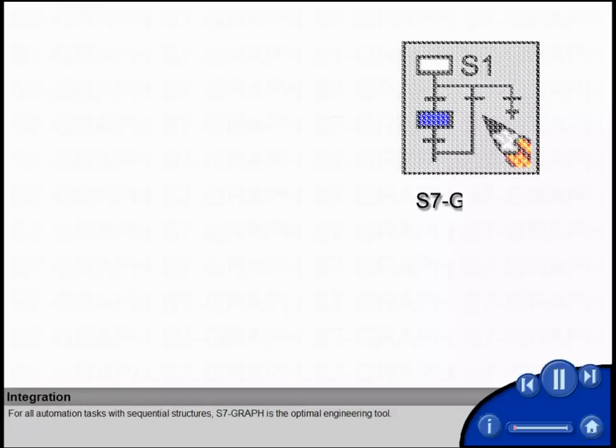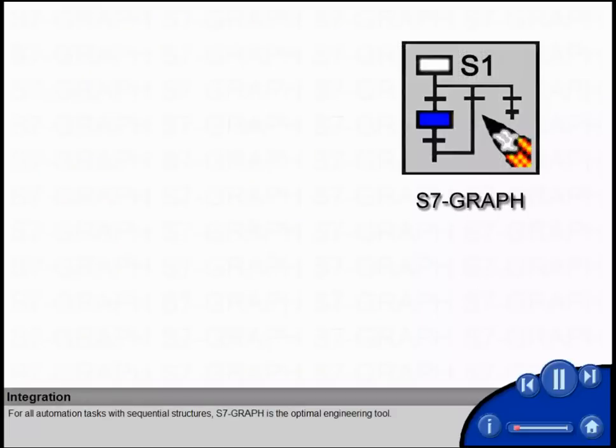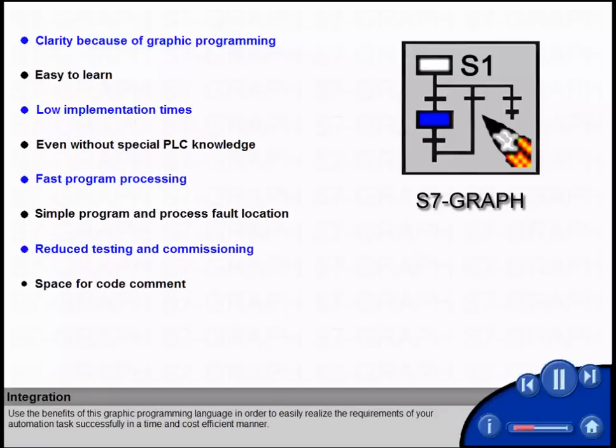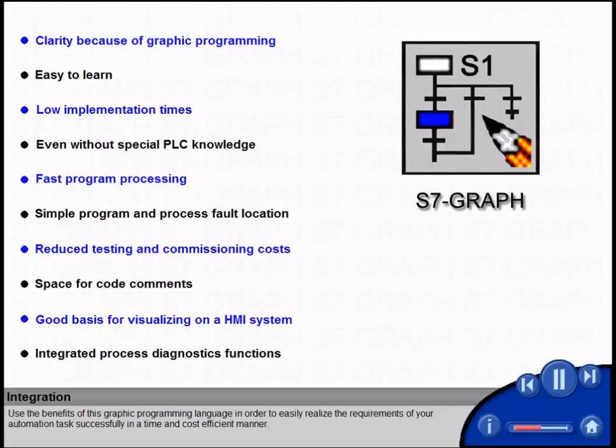For all automation tasks with sequential structures, S7-GRAPH is the optimal engineering tool. Use the benefits of this graphic programming language in order to easily realize the requirements of your automation tasks successfully, in a time and cost efficient manner.